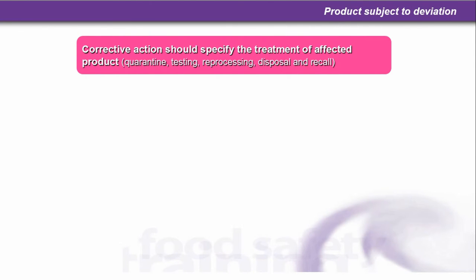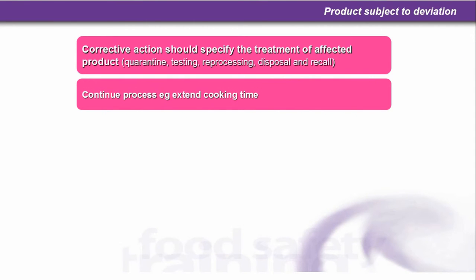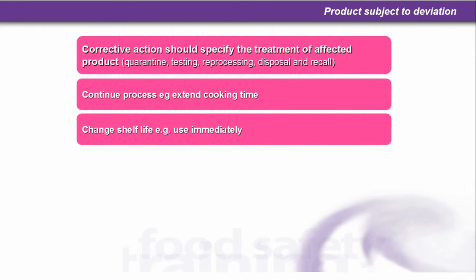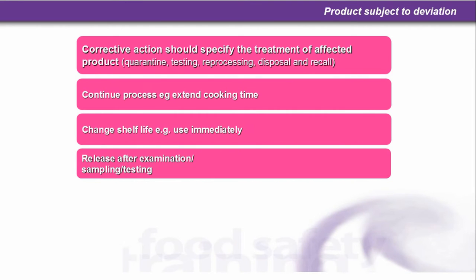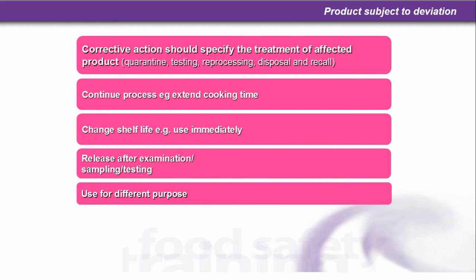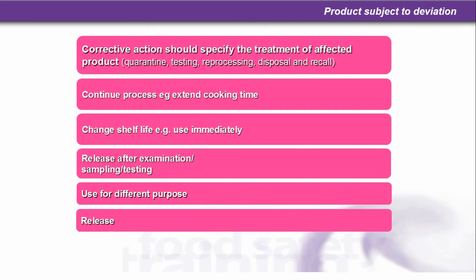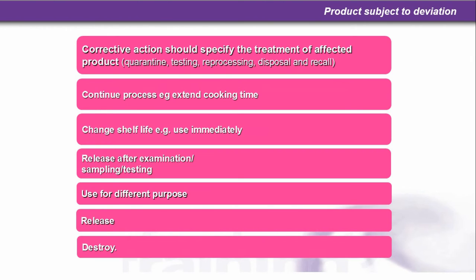Product subject to deviation. Corrective action should specify the treatment of affected product — for example: quarantine, testing, reprocessing, disposal and recall. A continued process perhaps: extend the cooking time, change the shelf life — for example, use immediately, release after examination, sampling, testing, use for a different purpose, or release or destroy — which we don't want, because obviously that will affect the bottom line and cost money.